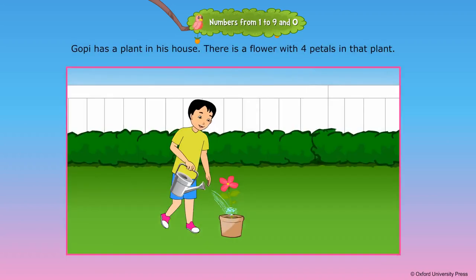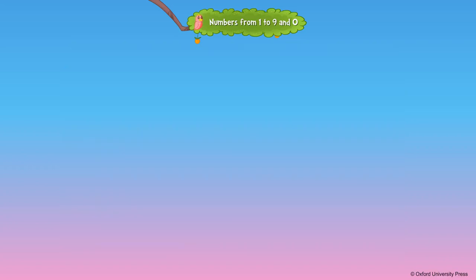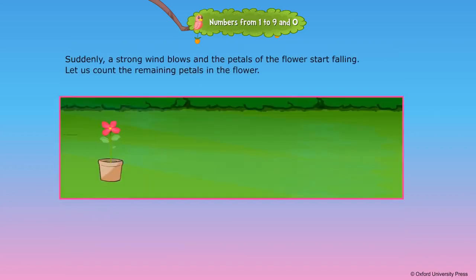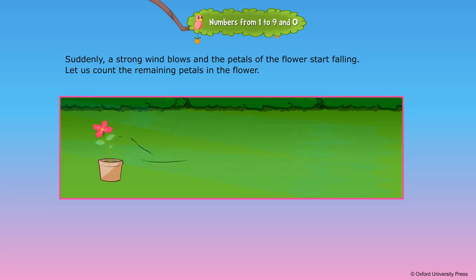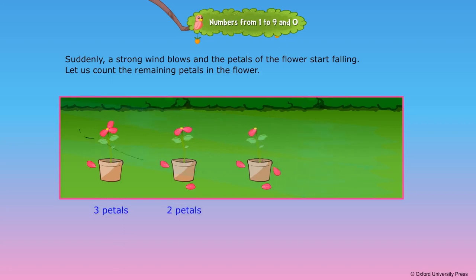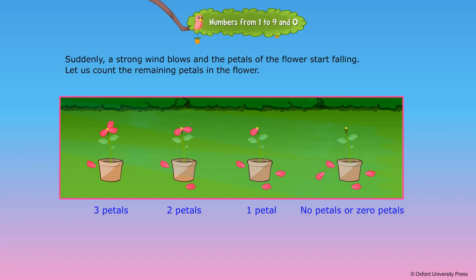Gopi has a plant in his house. There is a flower with four petals in that plant. Suddenly, a strong wind blows and the petals of the flower start falling. Let us count the remaining petals in the flower. Three petals, two petals, one petal, no petals or zero petals.